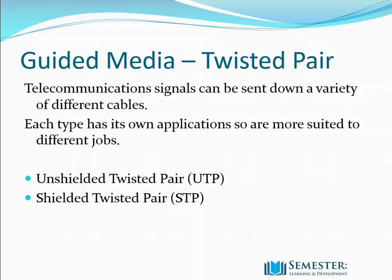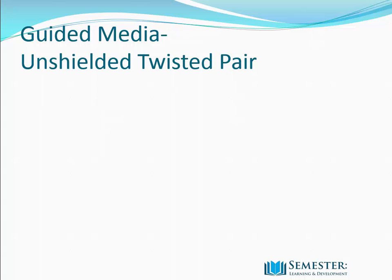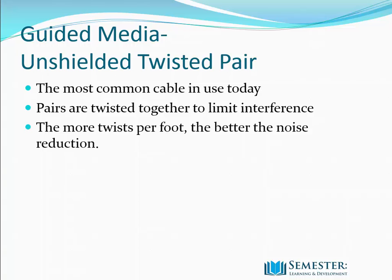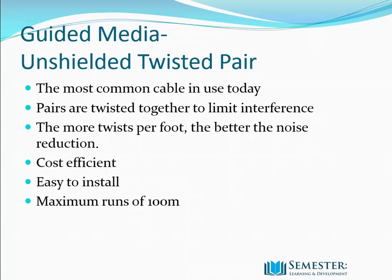The first type is UTP — Unshielded Twisted Pair — the most common cable in use today. A pair of copper wires are twisted together to limit interference, and these can be bundled together in larger cables. The most common is a four-pair cable used in networks. Cables are categorised by how much information they can carry; the more twists per foot, the better the noise reduction. They are very cost efficient and easy to install, with all data rates for maximum runs of 100 metres, used at frequencies from 100 Hz to 5 MHz.